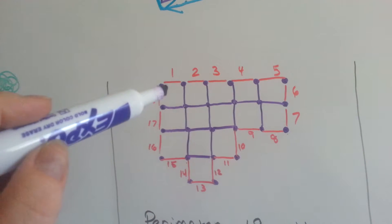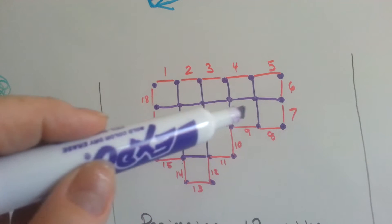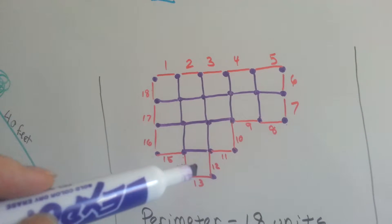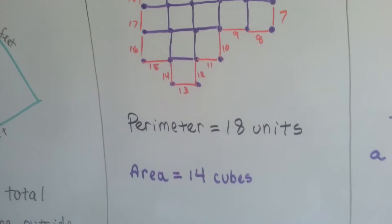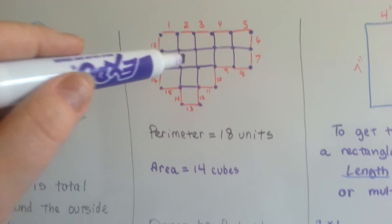But when we count the inside area, we have 1, 2, 3, 4, 5, 6, 7, 8, 9, 10, 11, 12, 13, 14. So the perimeter is 18 units, but the area is only 14 cubes, 14 squares.